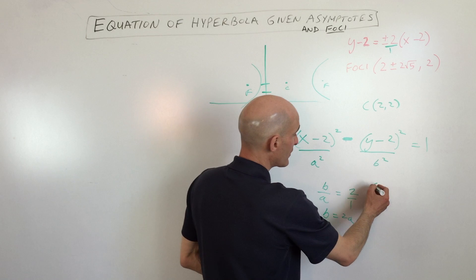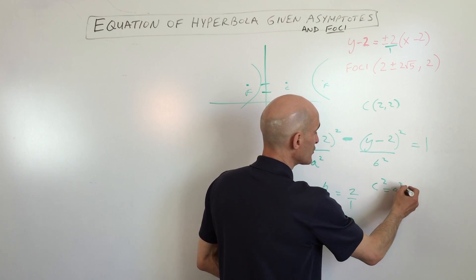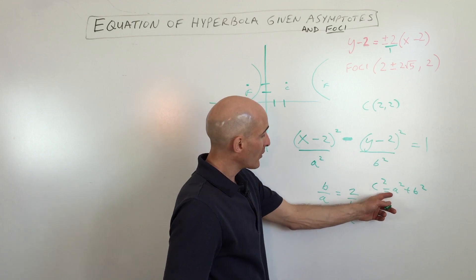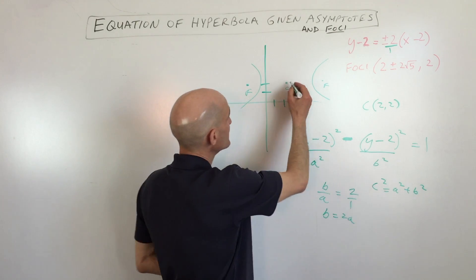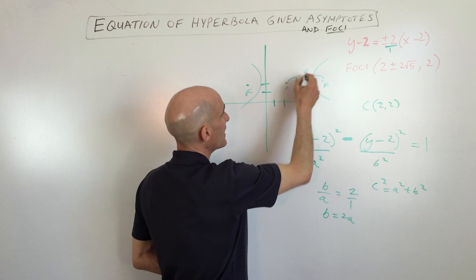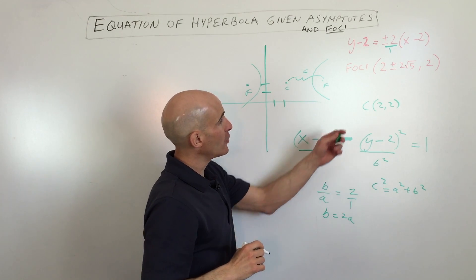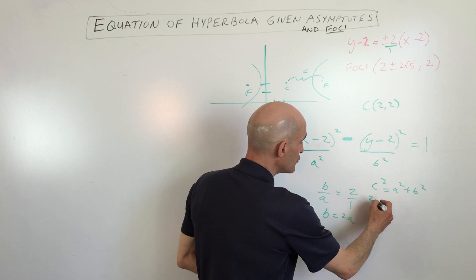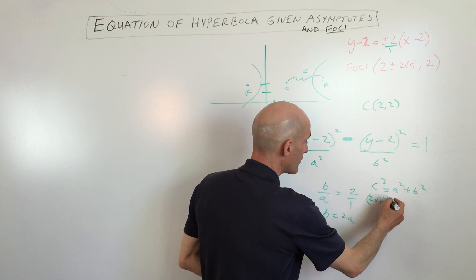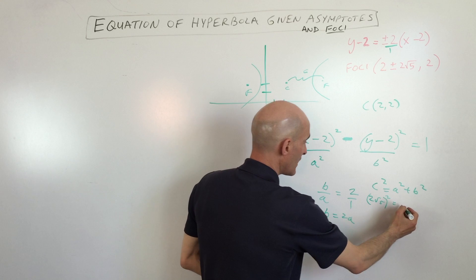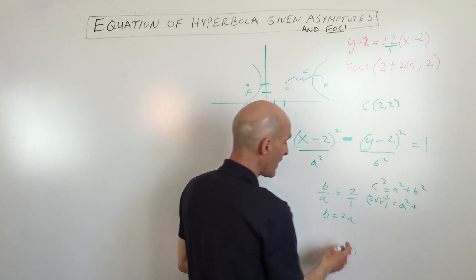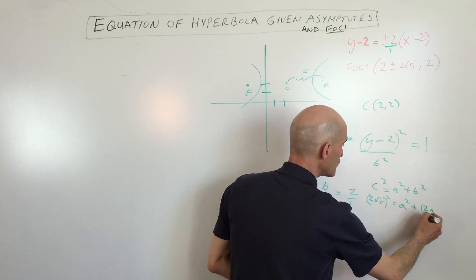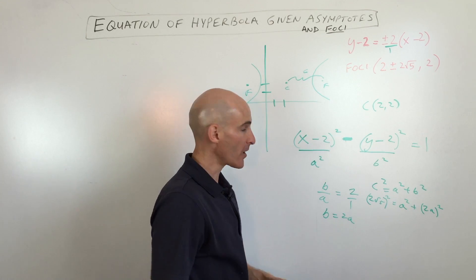And we know with hyperbolas, c squared equals a squared plus b squared, just like Pythagorean theorem. We know that c is the distance from the center to the foci. That's c. And we know that c is 2 square root 5. So we have 2 square root 5 squared equals a squared plus, and b equals 2 times a, so this is going to be 2 times a squared. So are you with me so far?